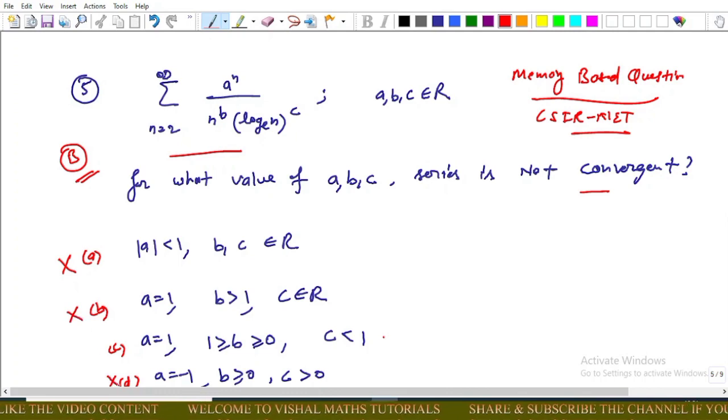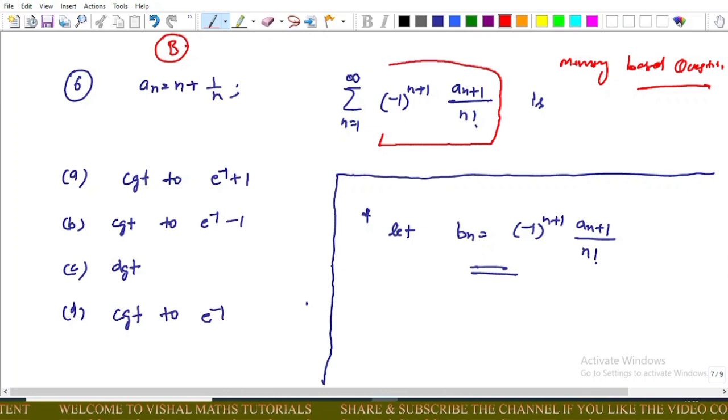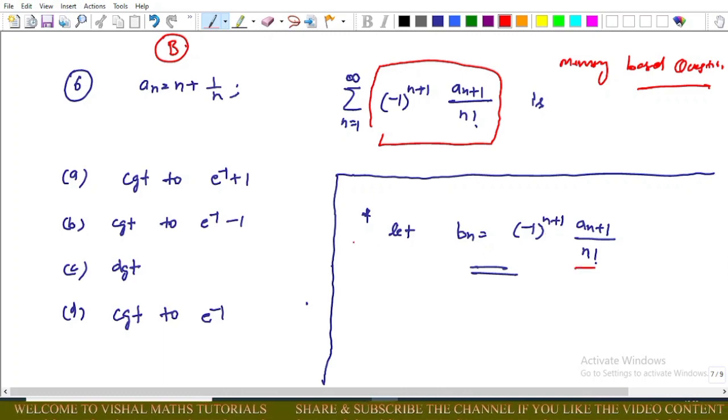Now come to the next question. Actually, this question is also based on convergent and divergent series. For this series, a_n equals n plus 1 upon n, and we take this term as b_n for sake of convenience. That is, b_n equals minus 1 power n plus 1 and this term. And we have to find convergent, divergent, and convergent.